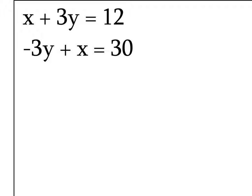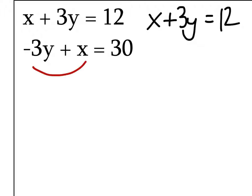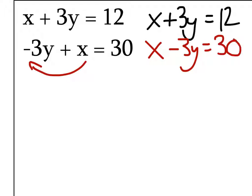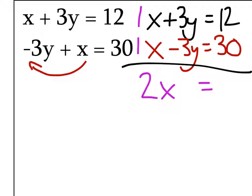Here's what we've got to do with this one — it's better if the terms are lined up. So that top one can stay the same: X plus 3Y equals 12. But we're going to have to use the commutative property to put the X in front on this one, which gives us X minus 3Y equals 30. Now we can just start adding because the 3Y's are the same and have opposite signs. 1X plus 1X is 2X. 12 plus 30 is 42.